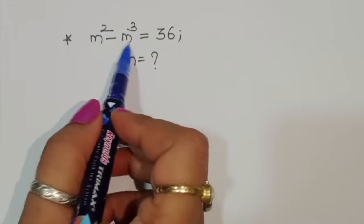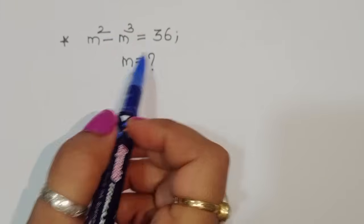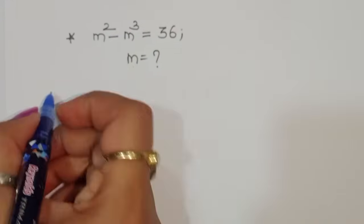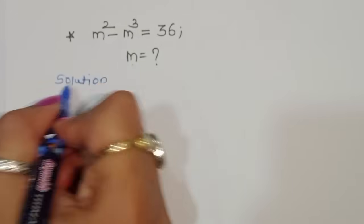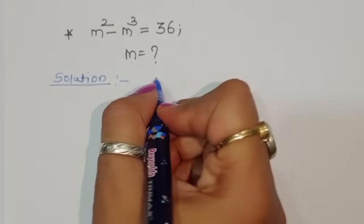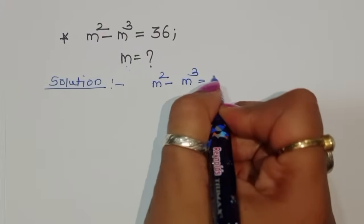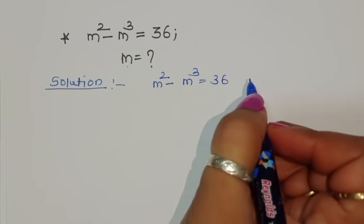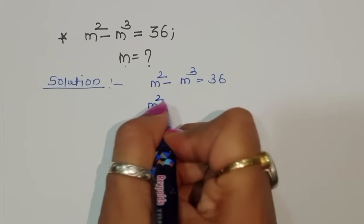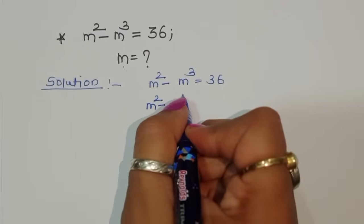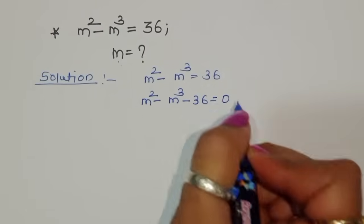Given m squared minus m cubed is equal to 36, we have to find out the value of m. Let's see the solution. m squared minus m cubed is equal to 36, so we can write this as m squared minus m cubed minus 36 is equal to 0.